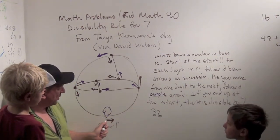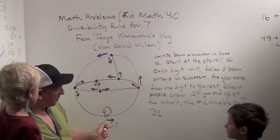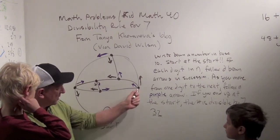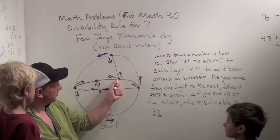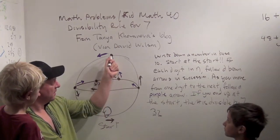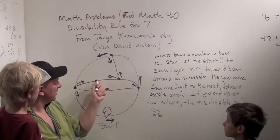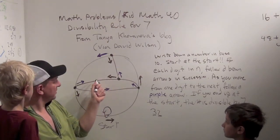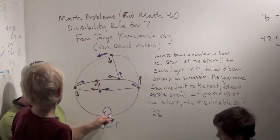So, for 32 we would go, we'll start here and follow three brown arrows. One, sends us to here, two, three. Then we'll follow a purple arrow and go back up here. And then we go two brown arrows. One, two. Oh! Not divisible by seven because we didn't end up back at the start. Okay?